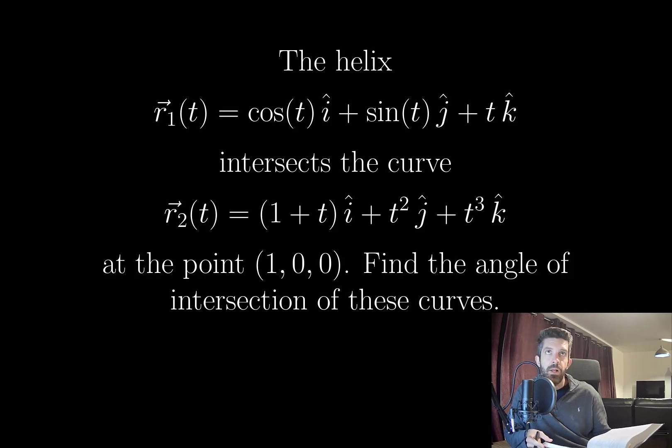I'll take it for granted that these two curves do intersect at the point (1,0,0). So in order to find the angle of intersection of these curves at that point, what I will do is compute directional derivatives. Basically just compute derivatives of the two curves with respect to t at that point. This will give me two vectors which point in the tangential direction of those curves at that point.